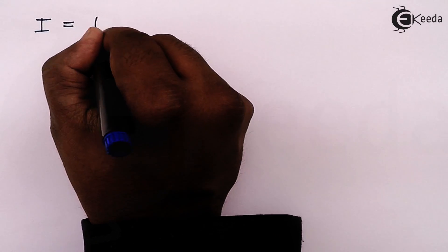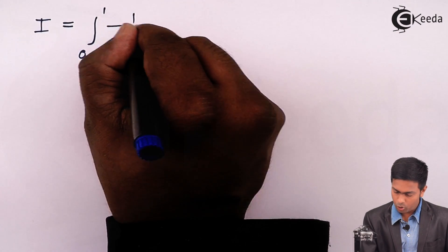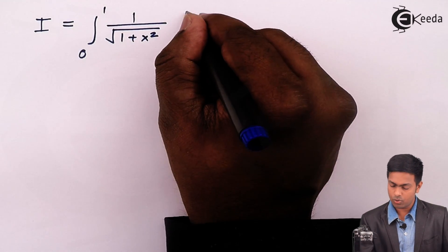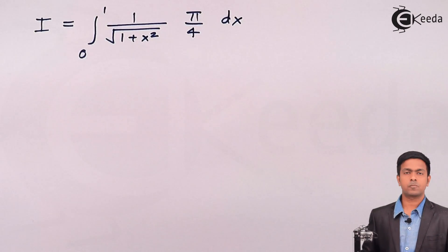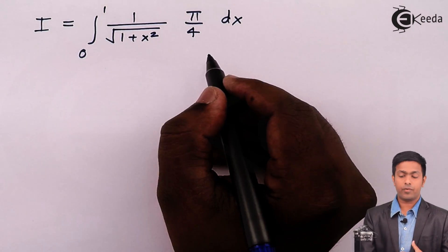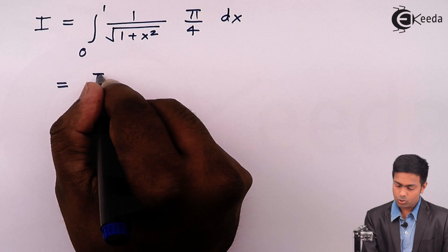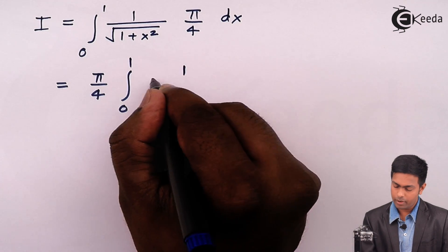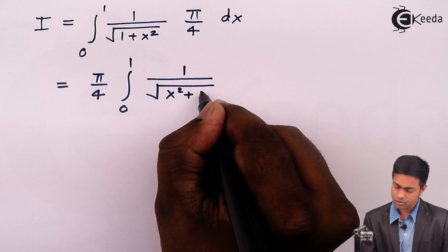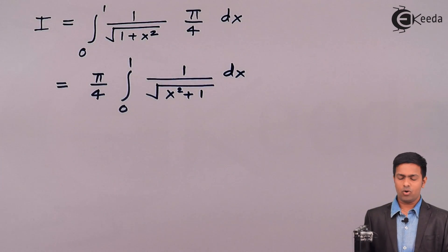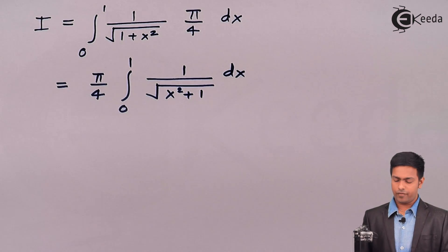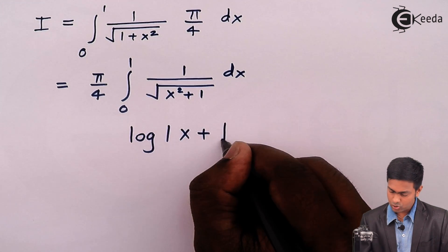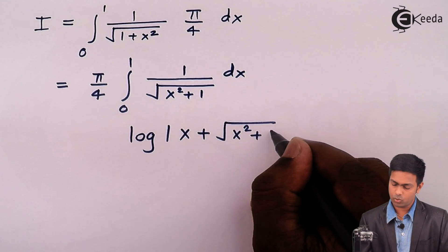So I equals integration from 0 to 1 of 1 upon square root of 1 plus x square times pi over 4, dx. Taking the constant pi over 4 outside, we have pi over 4 times integration from 0 to 1 of 1 over square root of x square plus 1 dx. The formula for this integration is log mod of x plus square root of x square plus a square, where a equals 1.